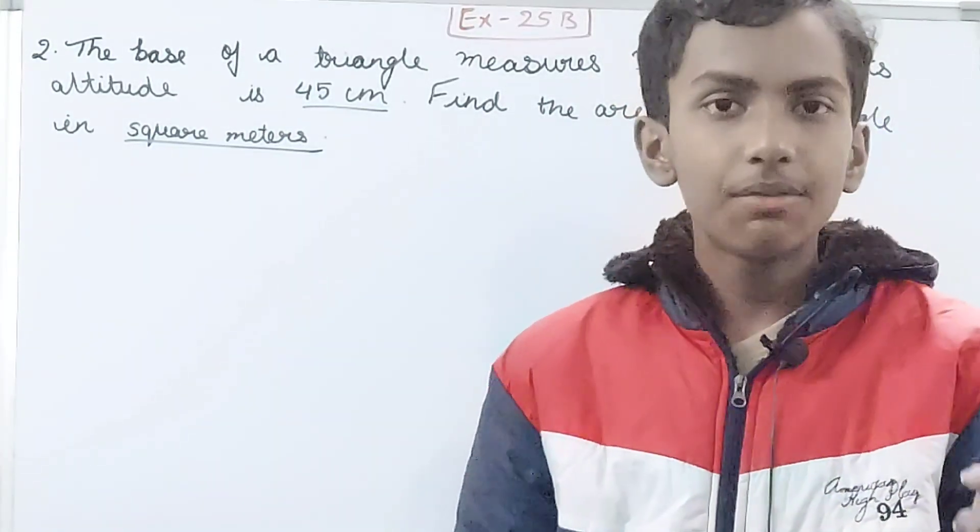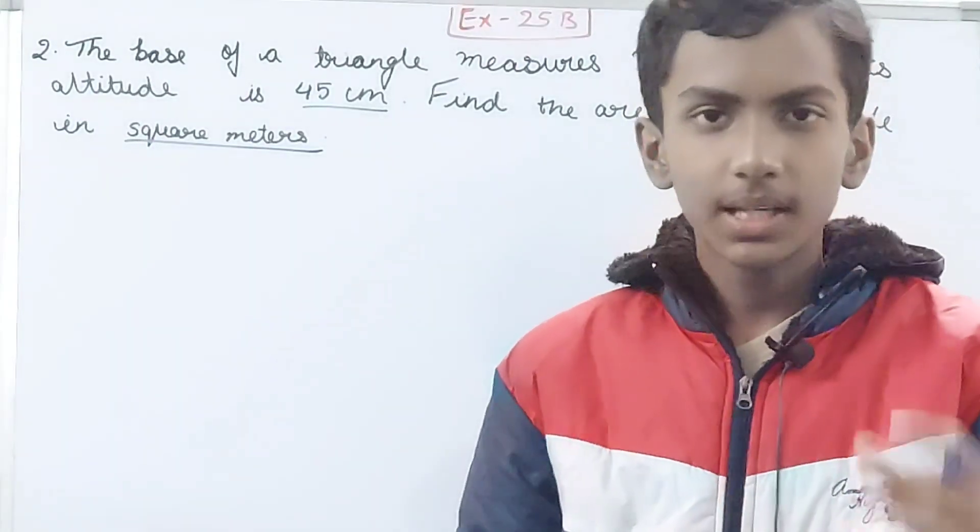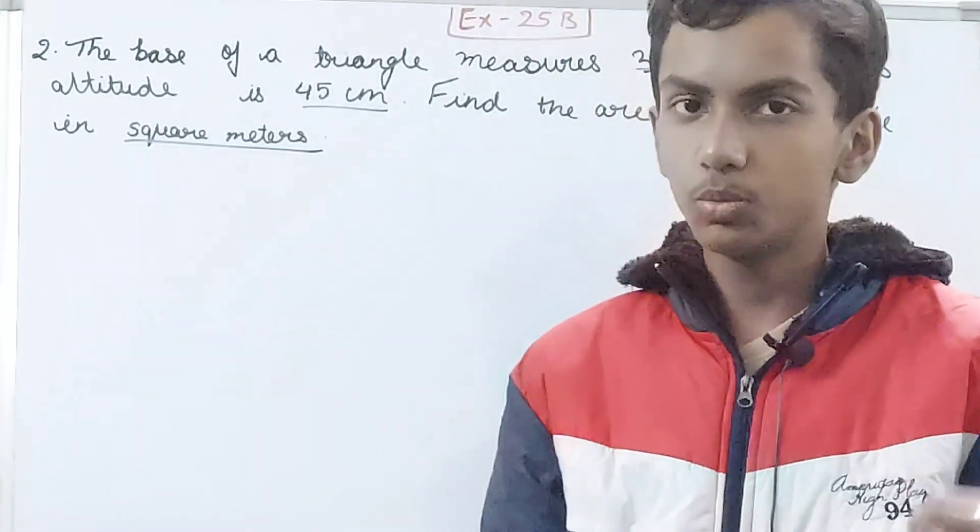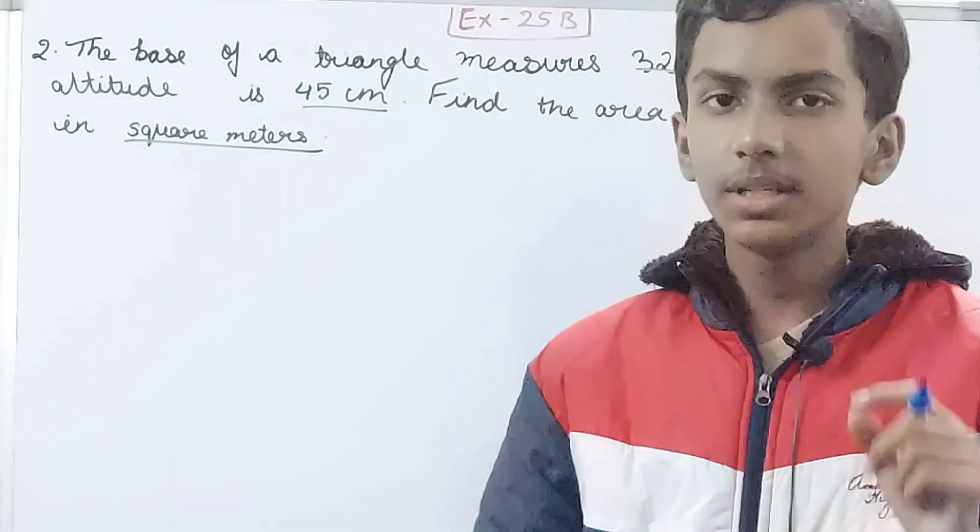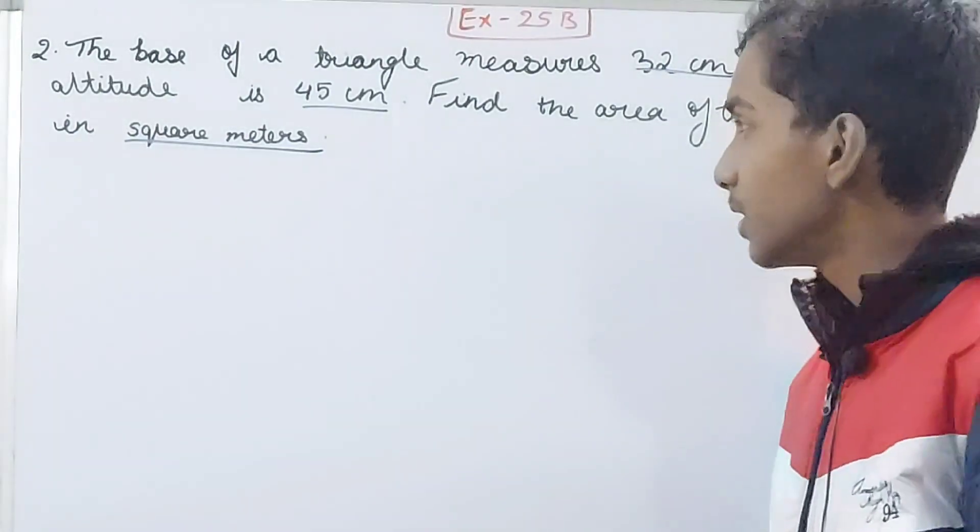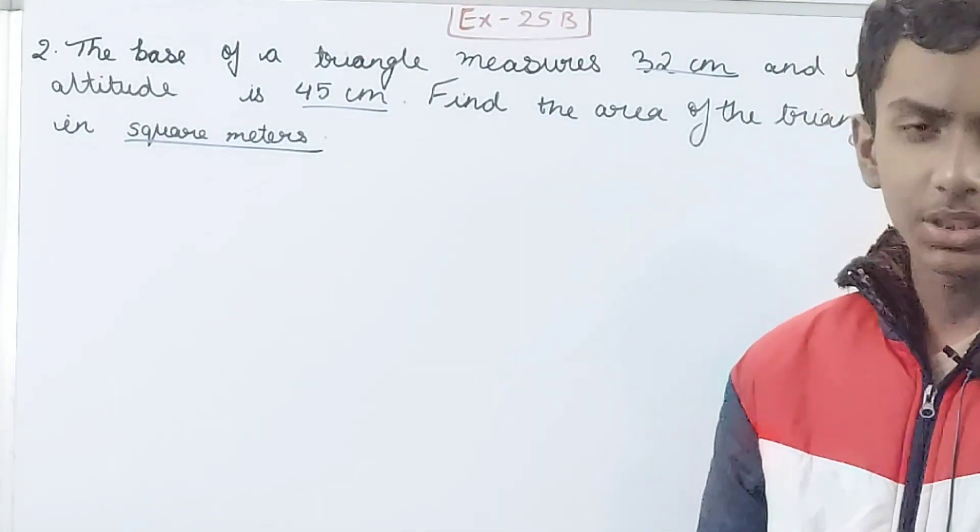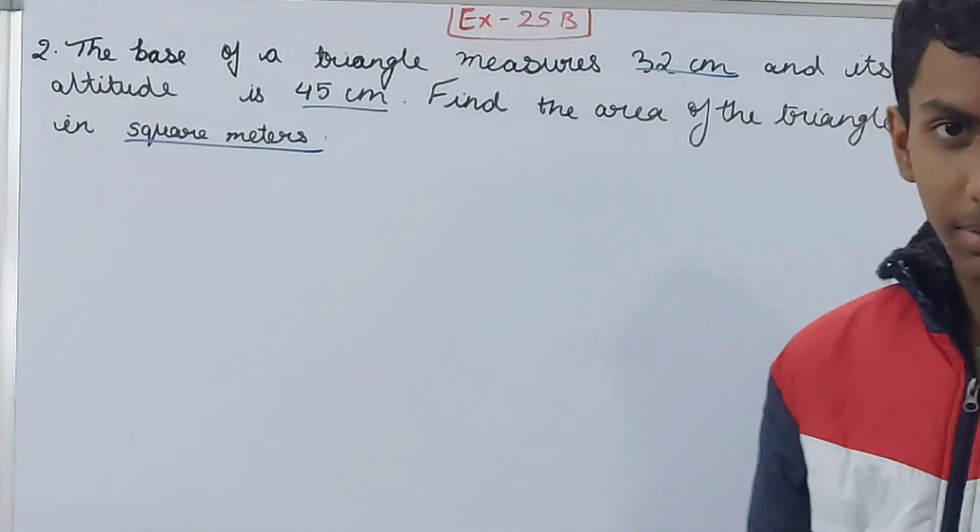Always remember, whenever we are calculating area—not just of a triangle but area of anything—the unit of the sides has to be the same. All sides have to be in the same unit, whether it's a square, rectangle, parallelogram, rhombus, trapezium, or triangle. The unit has to be the same: either centimeters, meters, or kilometers if needed.